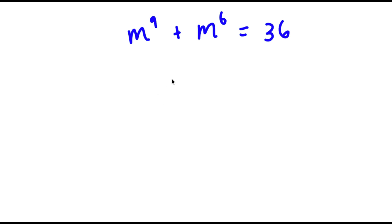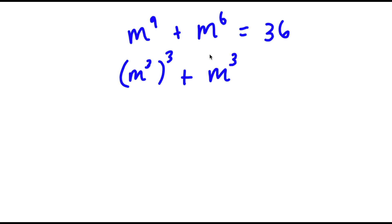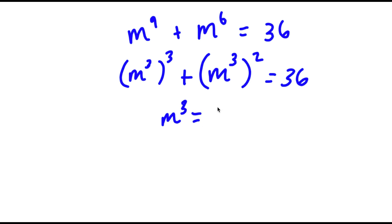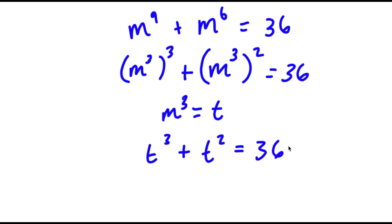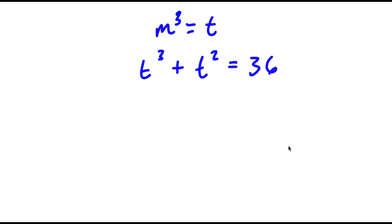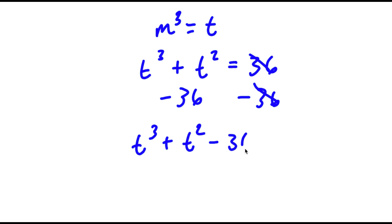In this problem I have m to the power of 9 plus m to the power of 6 is equal to 36. I'm going to rewrite m to the power of 9 as m to the power of 3 to the power of 3, and m to the power of 6 as m to the power of 3 to the power of 2. I'll let m to the power of 3 equal the variable t, so now I have t to the power of 3 plus t squared is equal to 36. Subtracting 36 gives t cubed plus t squared minus 36 is equal to 0.